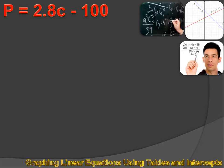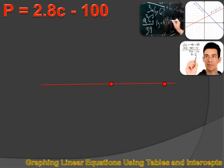Now I'd like to graph that equation — that would be helpful. I could look at the graph and maybe understand this business a little bit better. We're going to graph it using two methods: using tables, and using intercepts. In both cases, we're going to create some points on the graph and connect those points to create the line. If I've got two points, there's only one line that will go through them both, so we're going to create at least two points for each equation.